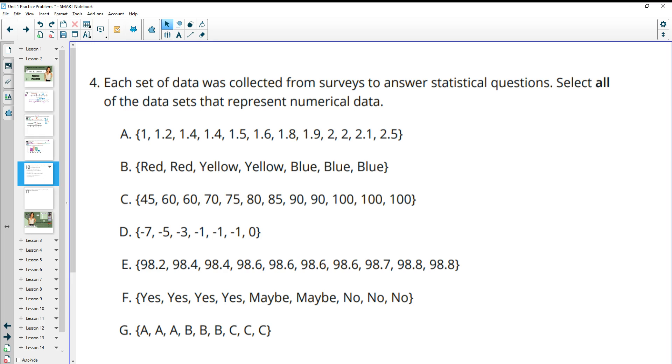Number four: each set of data was collected from surveys to answer statistical questions. Select all data sets that represent numerical data. So we're looking for numbers. So as long as it has numbers, it's going to be numerical data. Words, not numerical. So all of this would be numerical data. These are not.